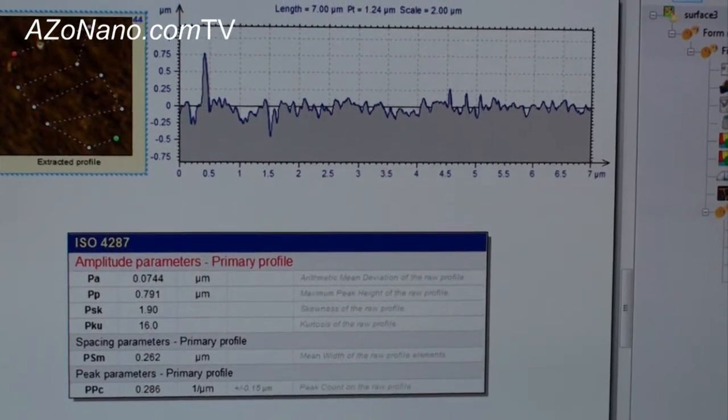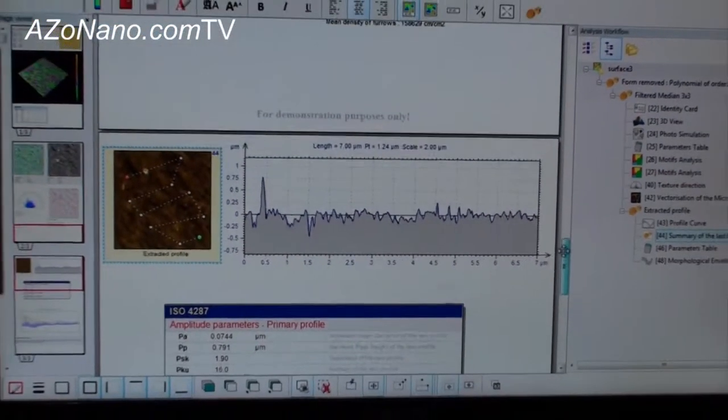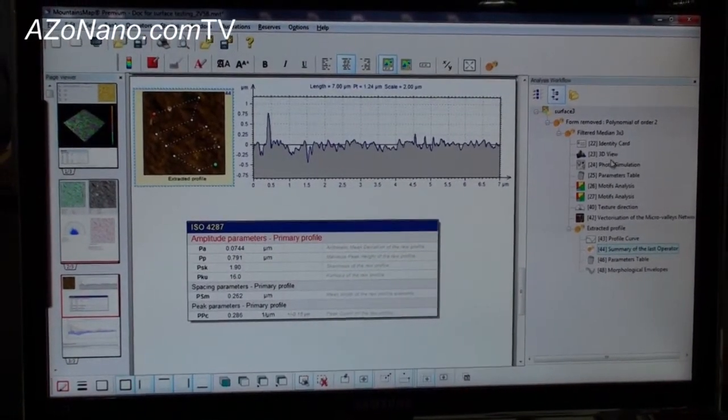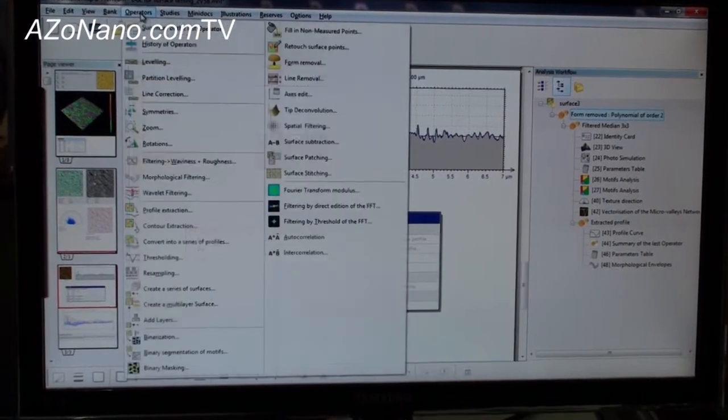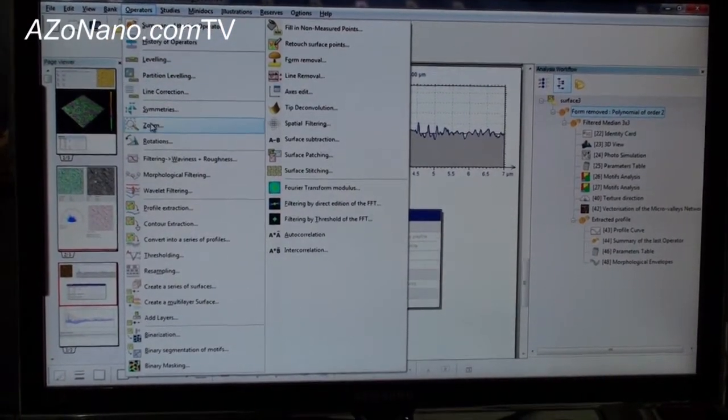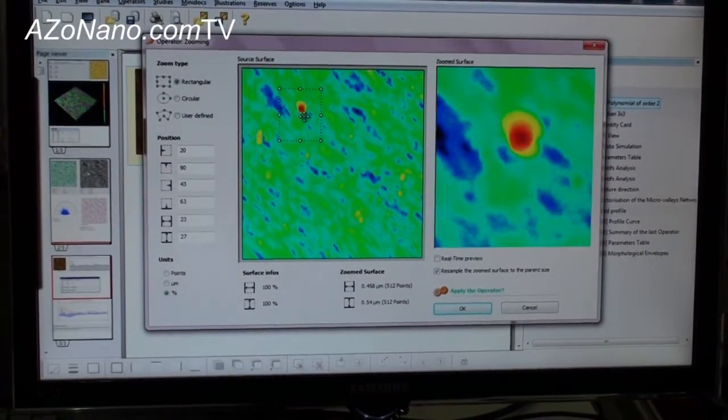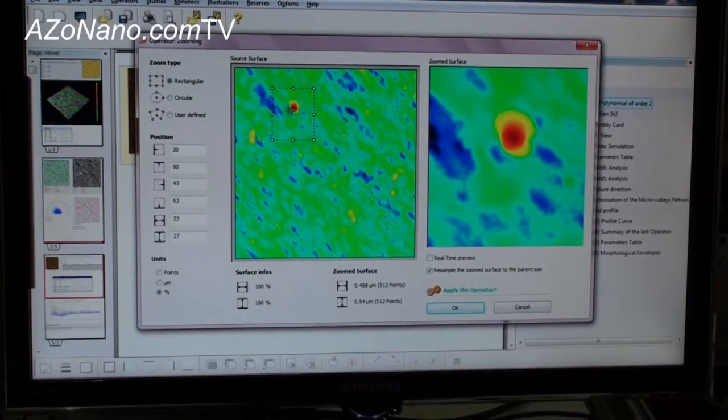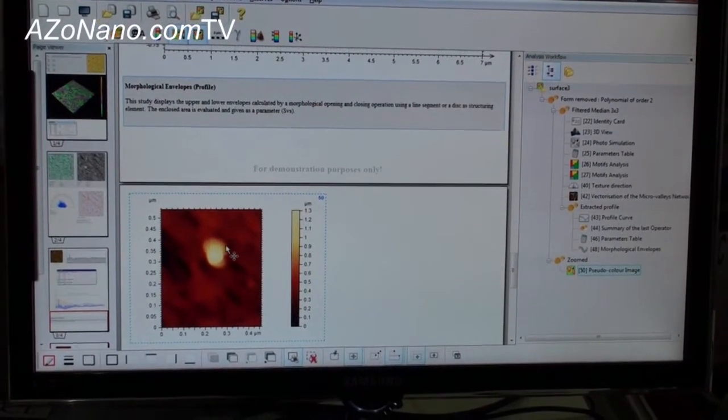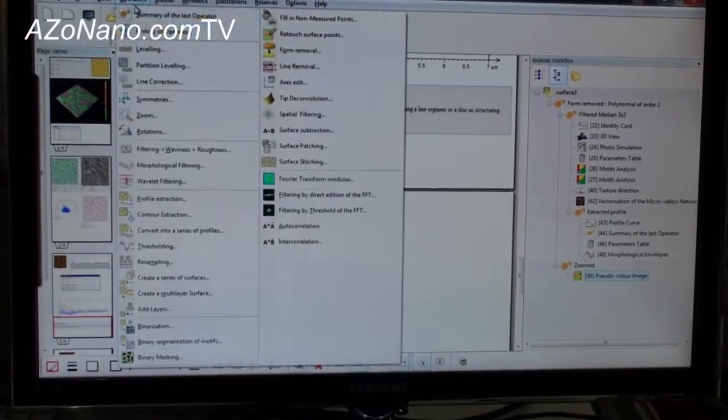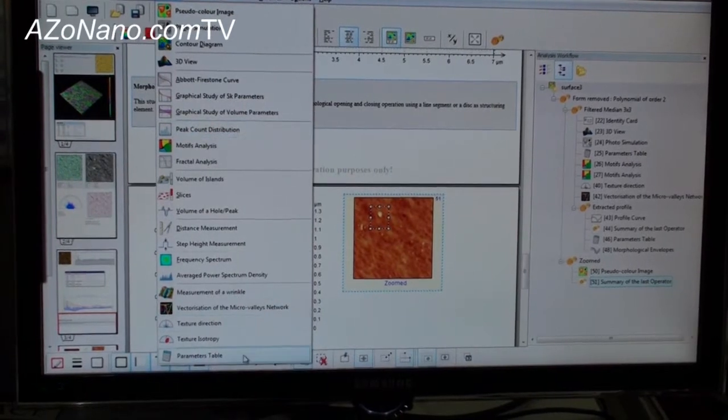And now I have a very large profile extraction with new parameters calculated and refreshed by the new profile extraction. So the software itself is very interactive. Anytime you have a document, you can open it and modify it and eventually you can make some more analysis. For example, I want to add a zoom. So I go to operators, zoom in and I want to zoom on a small particle here.